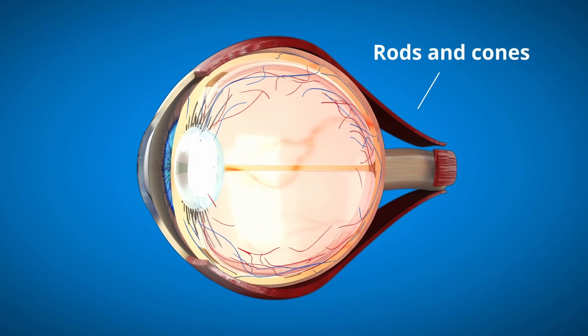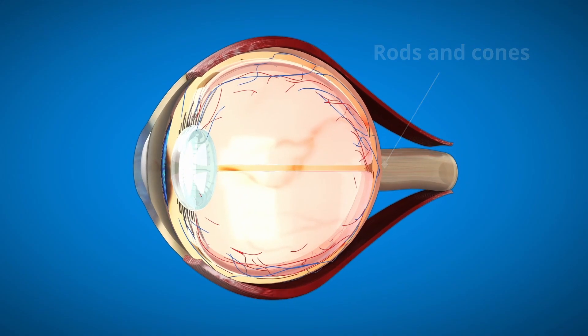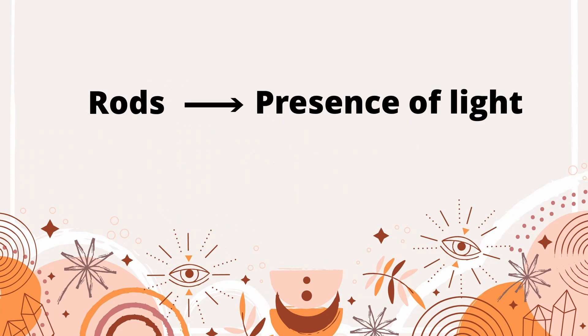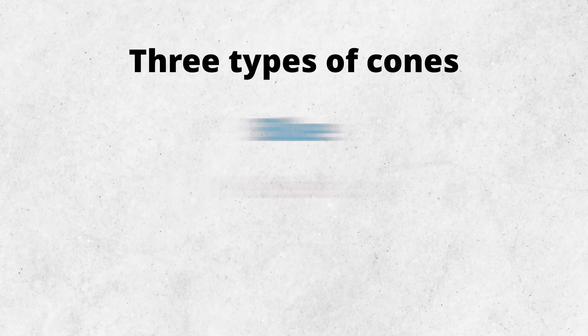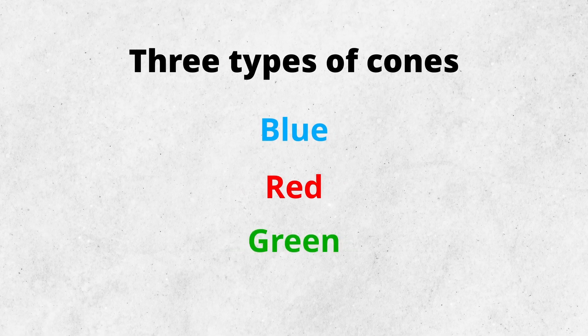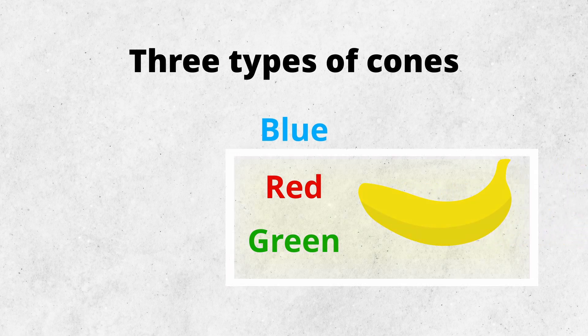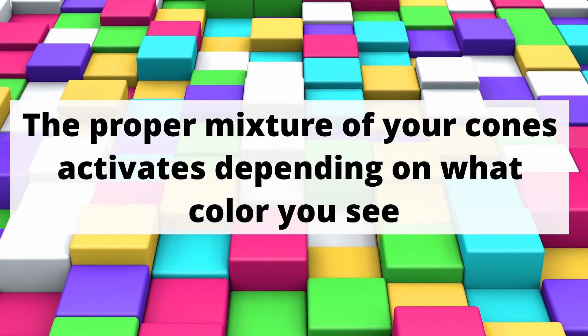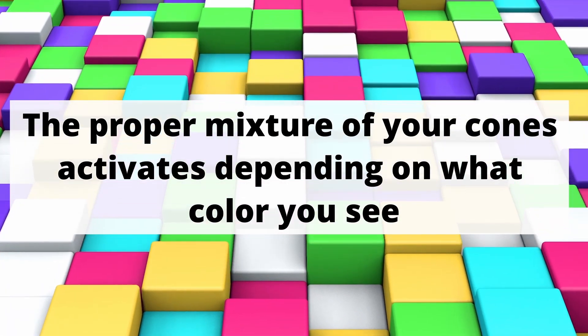When you walk into a dark room, have you ever noticed that it takes time for your eyes to adjust? This is due to the presence of rods and cones at the back of our eyes. Rods are sensitive and respond only to the presence or absence of light, whereas cones are all about color. We have three different types of cones: blue, red, and green. When you look at a banana, your red and green cones fire up and allow you to see the bright hue of the yellow fruit.